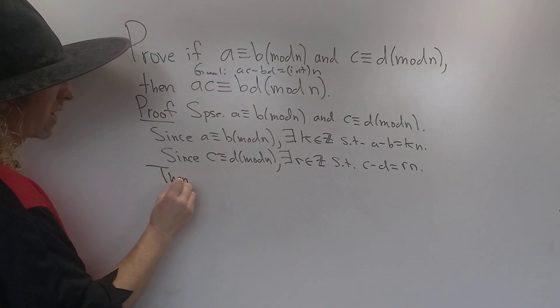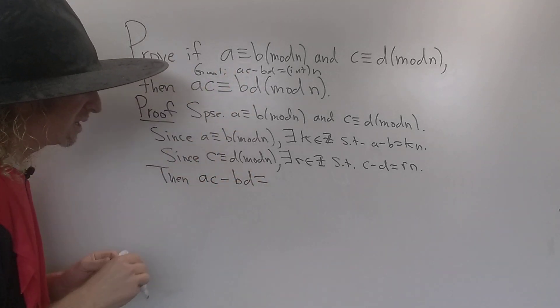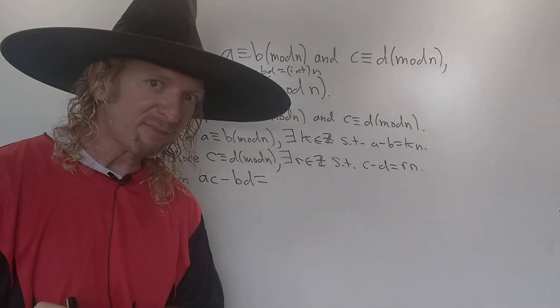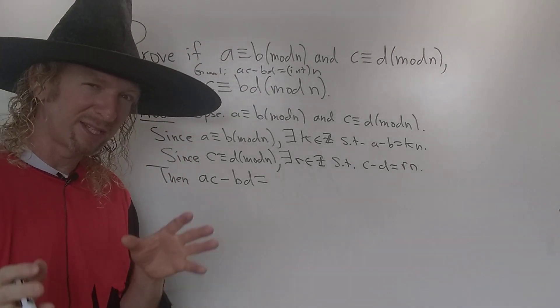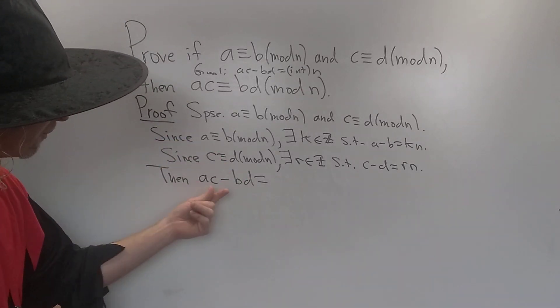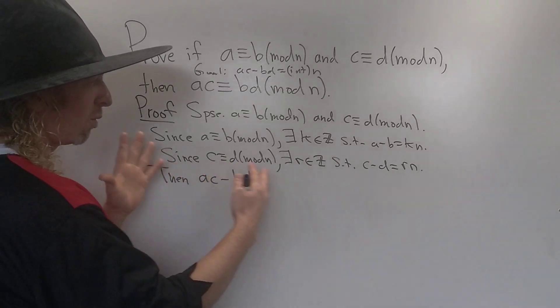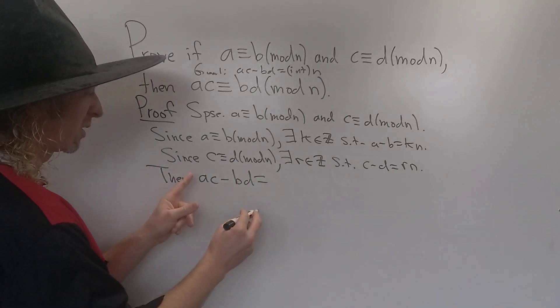So let's go ahead and write down AC minus BD. Check this out. So the trick here, this is a really clever proof. And the reason I know how to do it is because I did it a long time ago. I haven't done it recently, but it should work. We want to insert zero somehow, a connecting piece that will allow us to do a clever factoring trick. So watch this.